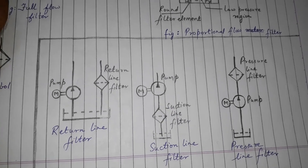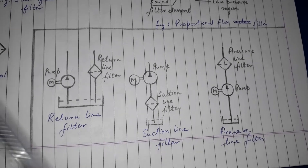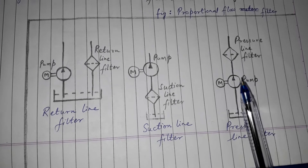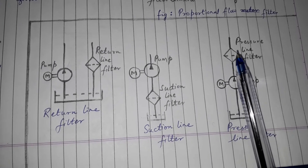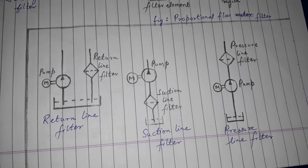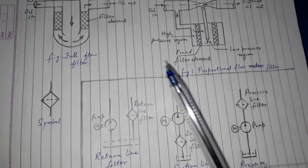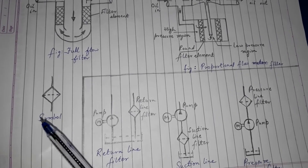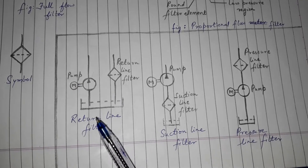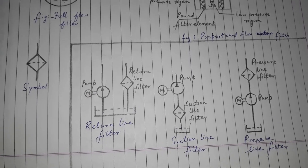The second location is the suction line filter, where the filter is on the suction line of the pump, so the oil is filtered before entering the pump. The third is the pressure line filter, where the filter is located after the pump, on the delivery side. So we have covered full flow filter, proportional flow filter, the symbol of the filter, and filters based on location.